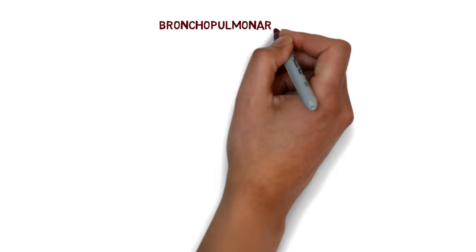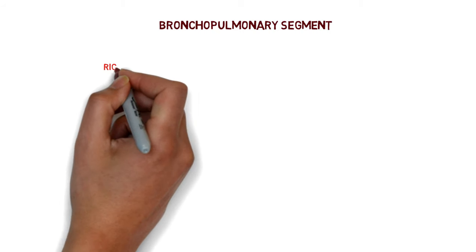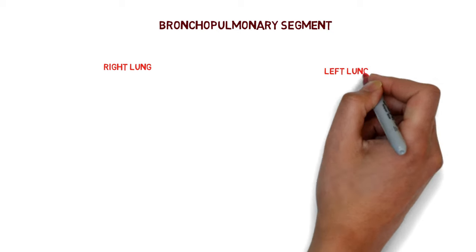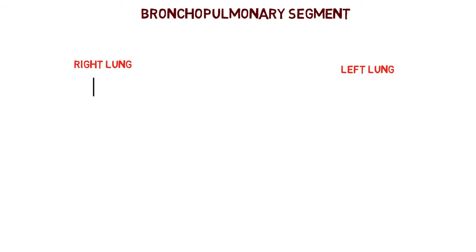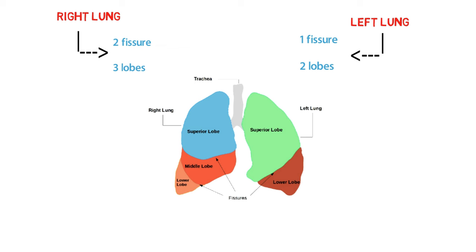Today we are going to talk about bronchopulmonary segments. We have two lungs — the right lung has two fissures, a horizontal fissure and an oblique fissure, giving it three lobes: superior, middle, and lower lobe. The left lung has only one fissure, the oblique fissure, giving it two lobes: upper lobe and lower lobe.